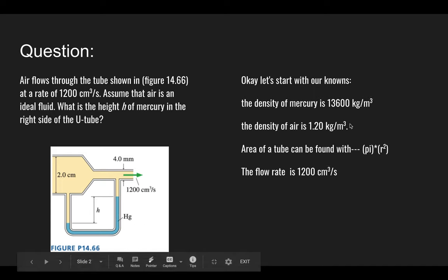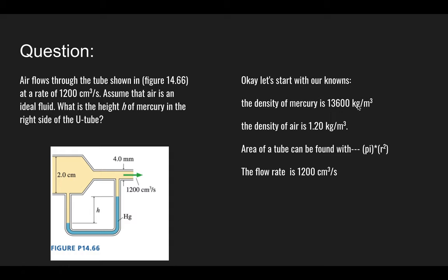And then here's a list of the information that we know. So we know the density of mercury is 13,600 kilograms per meter cubed. We know the density of air is 1.2 kilograms per meter cubed, and then we know that the area of a tube can be found with the equation pi times the radius squared. And then also it gives us the flow rate, which is 1,200 centimeters cubed per second.